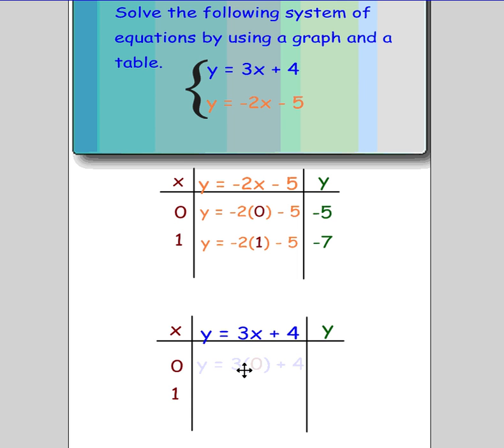And then when I plug in 0 to this particular equation, so y = 3 times 0 plus 4 gives me a 4. Plug in 1, y = 3 times 1 plus 4 gives me 7. So my coordinates here are 0, 4, 1, 7.